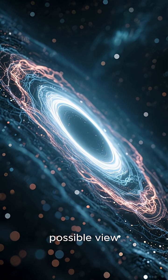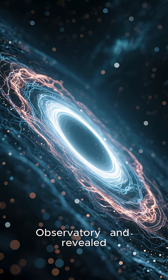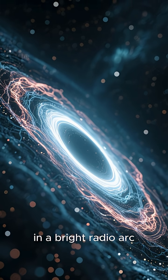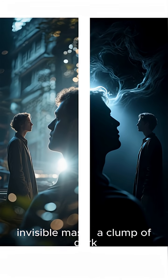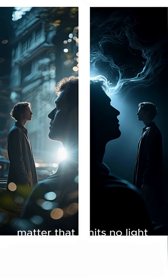This gave them the sharpest possible view, 13 times better than even the Keck Observatory, and revealed a tiny pinch in a bright radio arc. That subtle distortion could only be explained by an invisible mass, a clump of dark matter that emits no light at all.